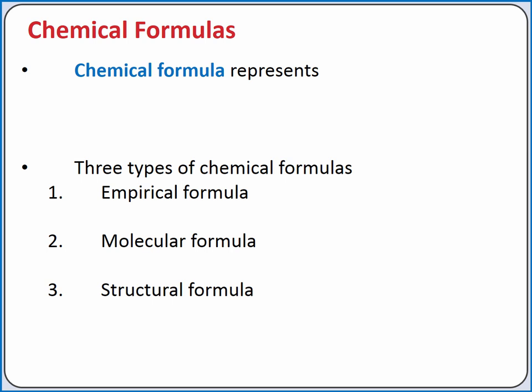A chemical formula represents the elements present in a compound and the relative numbers of atoms or ions. There are three types of chemical formulas we'll discuss: the empirical formula, the molecular formula, and the structural formula.